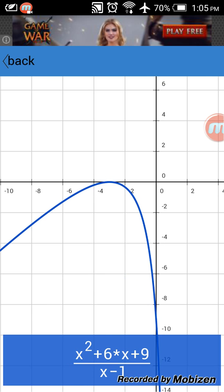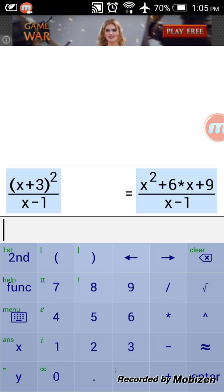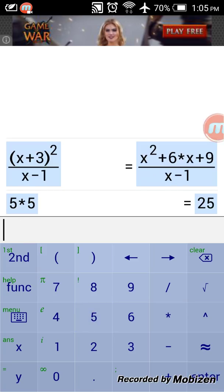You can also calculate simple operations like 5 times 5 is 25, 5 cubed is 125.